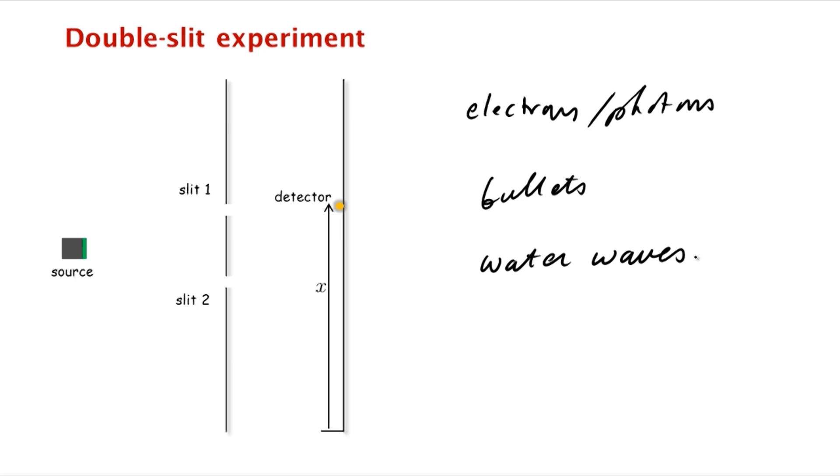So what we are going to do is study how the double slit experiment behaves, what's the outcome, when our source is a source of bullets, when it's a source of water waves, and then how does this contrast and compare to what happens in the case of subatomic particles.